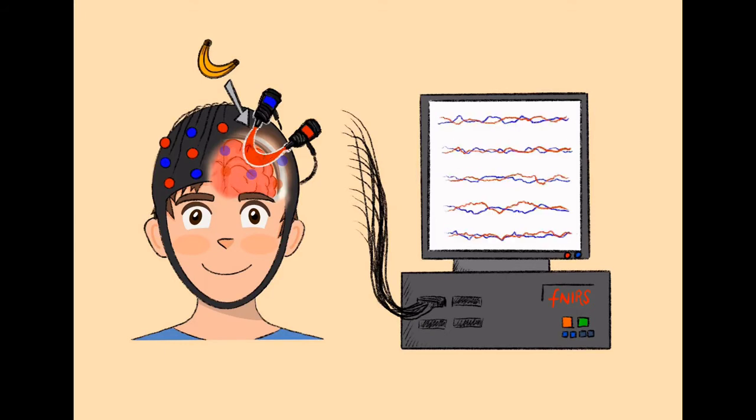Some of the light travels back to the surface of your head, where the blue sensors are. The blue sensors measure the exact amount of light that is coming back.